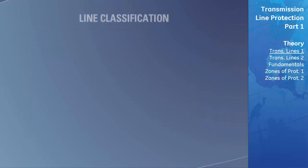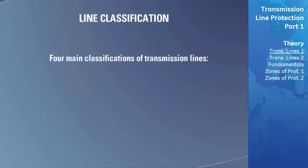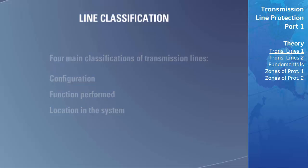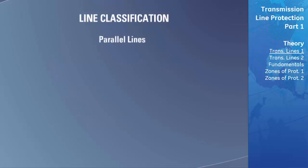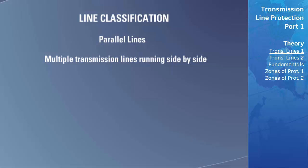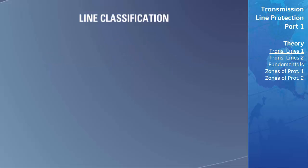Transmission lines can be broken down into one of four main classifications that describe their configuration, the function they perform, and their location in the system. Parallel lines describe a configuration where multiple transmission lines run side by side. This is done to transmit large amounts of power from one location to another, in addition to providing a redundant path for power in case one of the lines were shut down due to a fault.